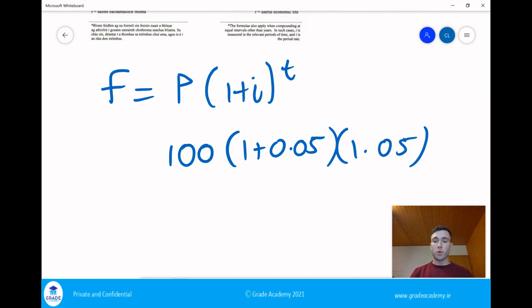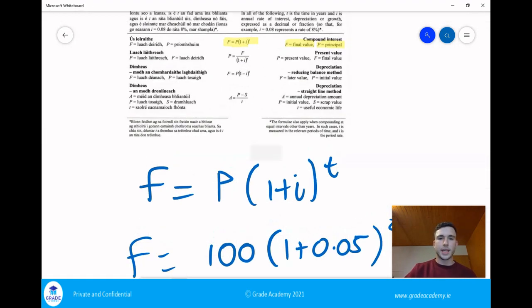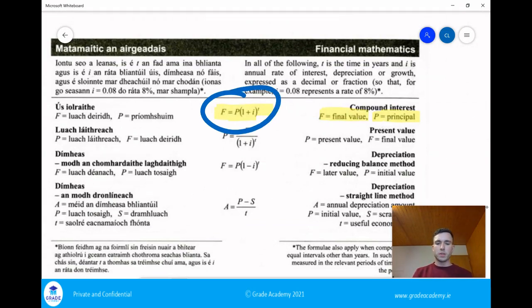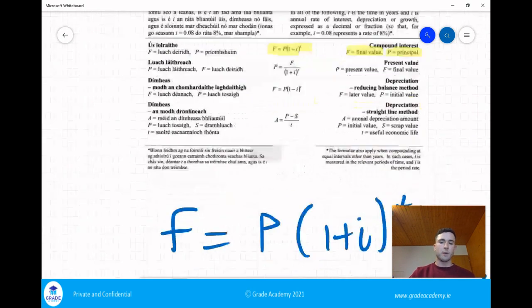What's another way of saying 1.05 multiplied by 1.05? Well a quicker way of saying that is 1.05 squared. You'll actually see that's exactly how they've written it in the formula. It's F is equal to P multiplied by 1 plus i to the power t. That's the exact formula we have.